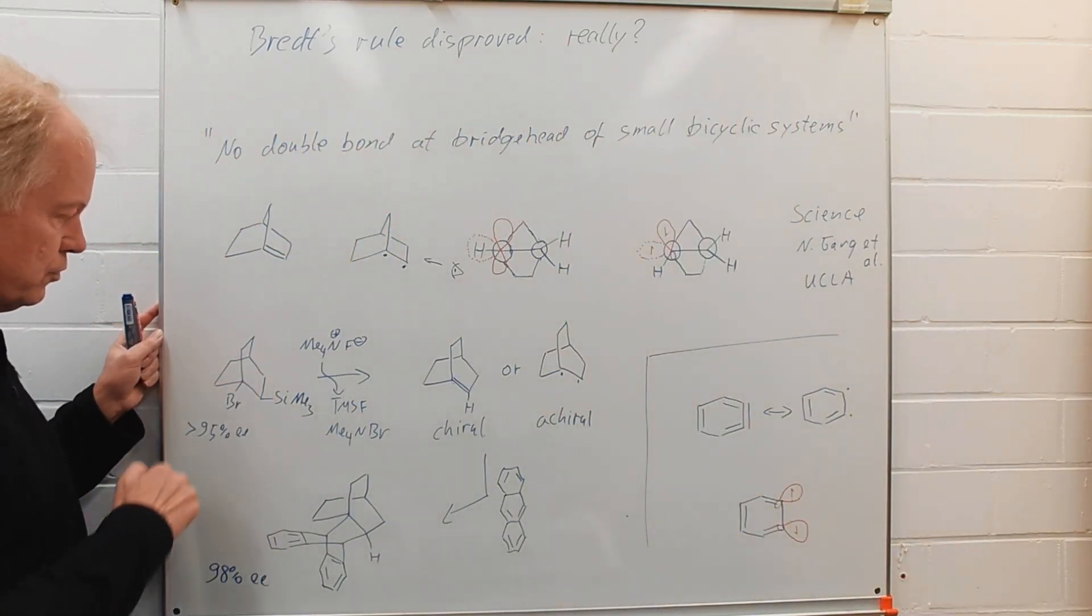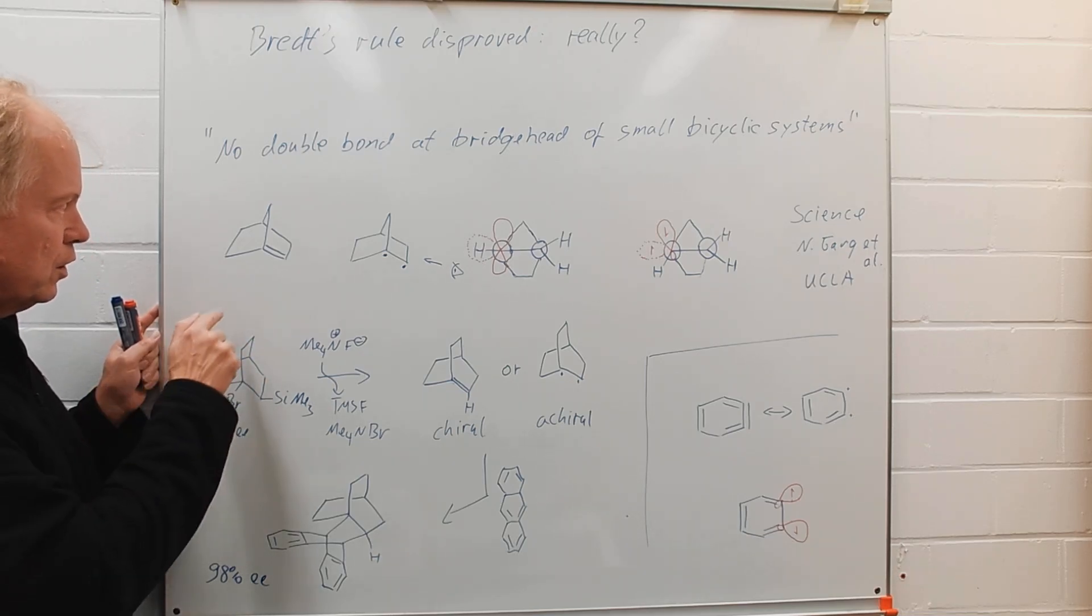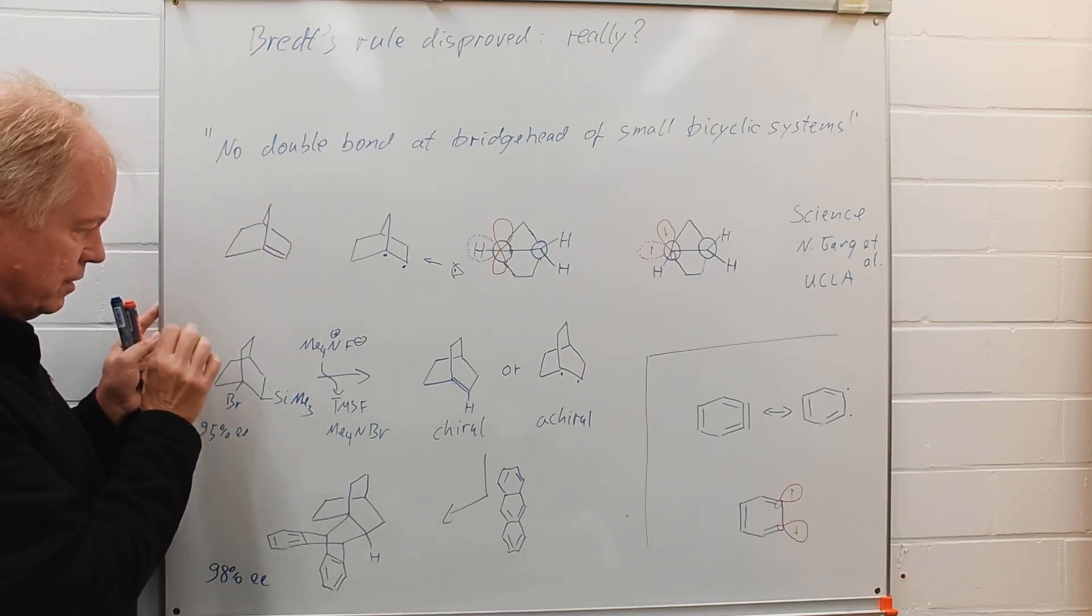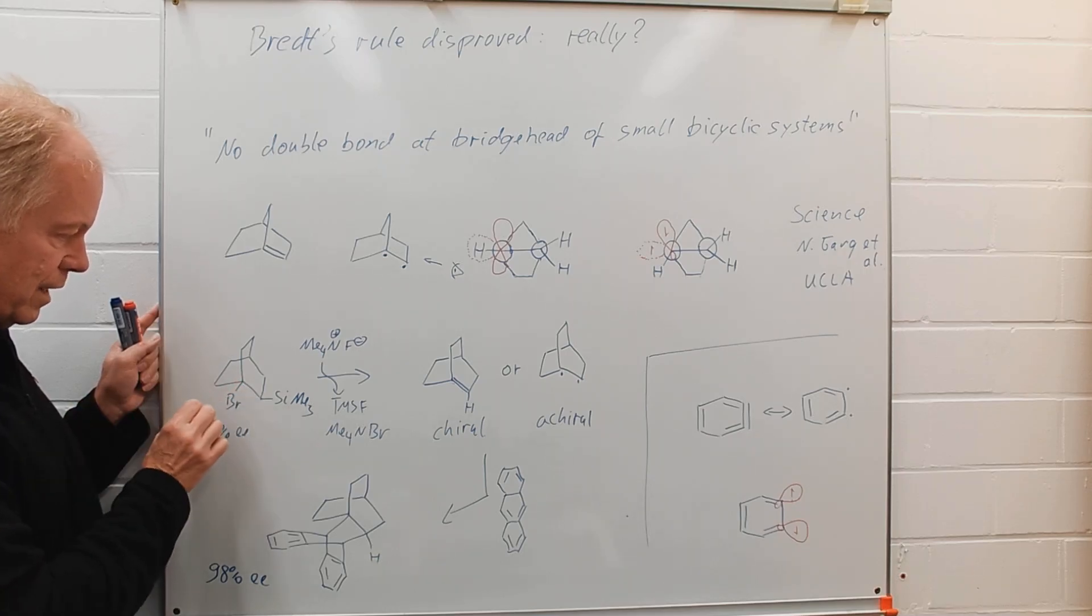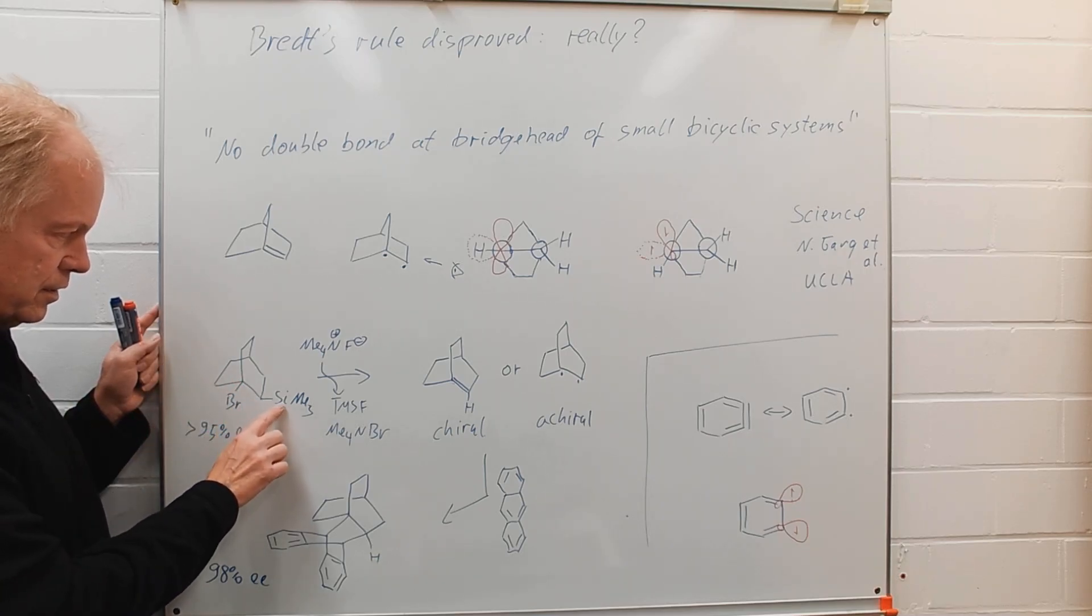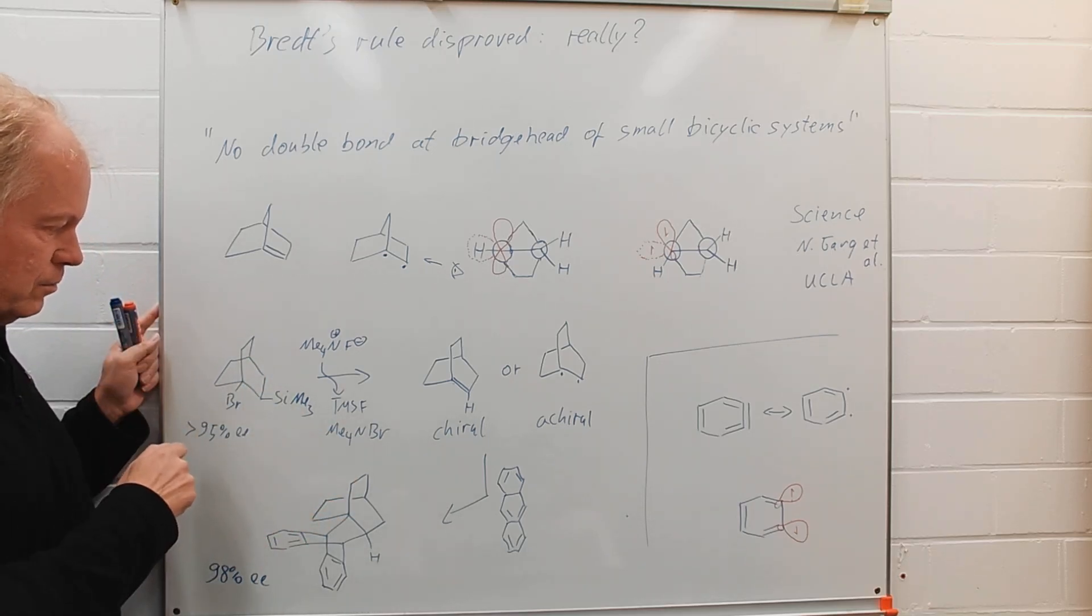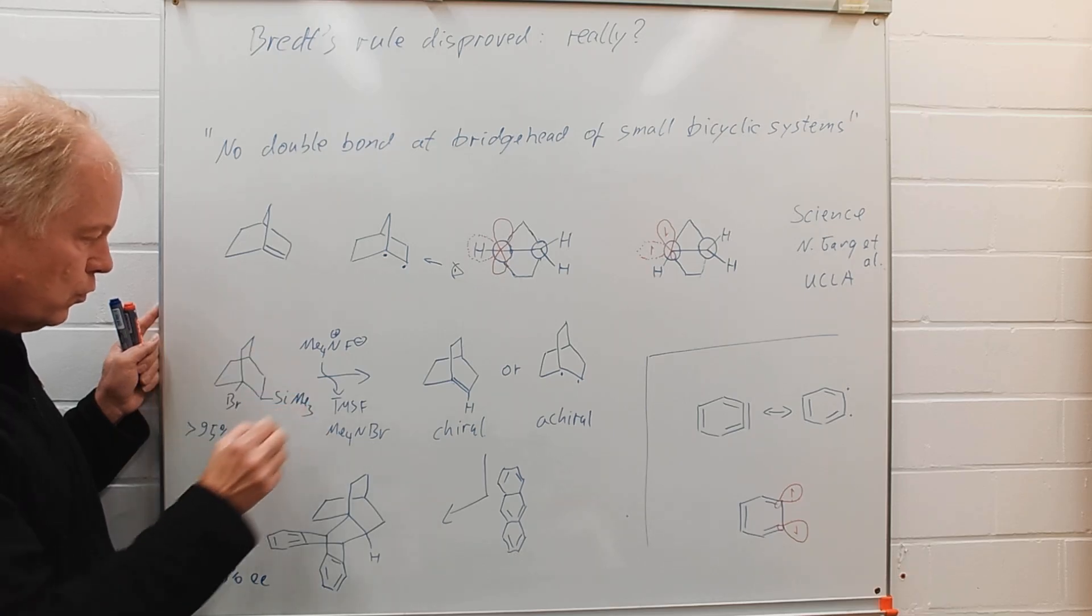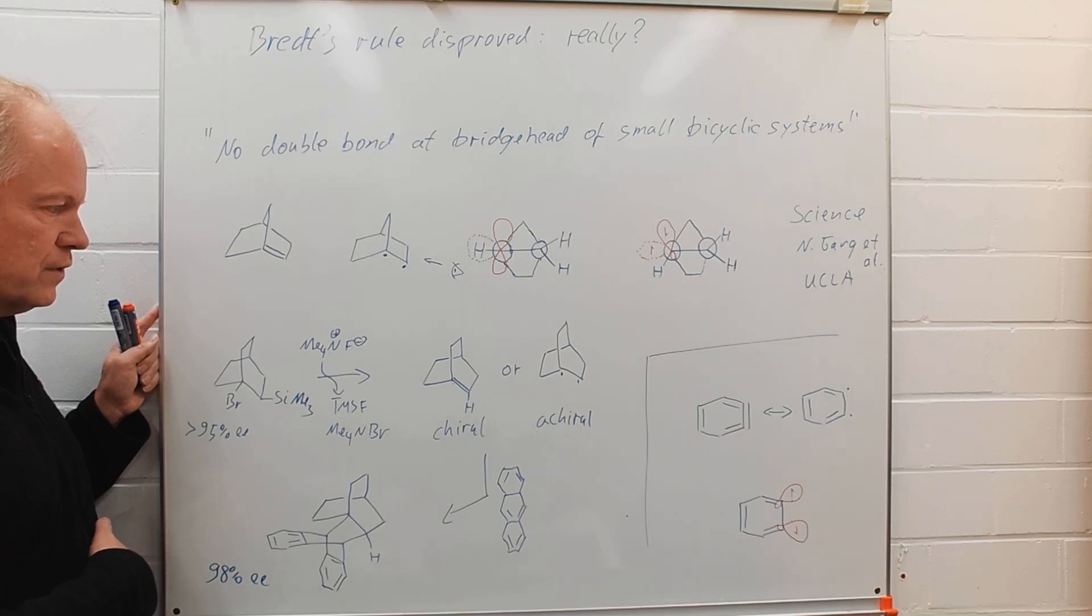So, let us have a look to the experiments. Here, most interestingly, at a somewhat modified starting material, not with a CH2 bridge, but with this ethane diyl bridge. We start with a molecule here, a bromide at the bridgehead position, here a TMS group and it is known for quite a while that you can make an elimination reaction by offering fluoride. This will introduce the elimination reaction.